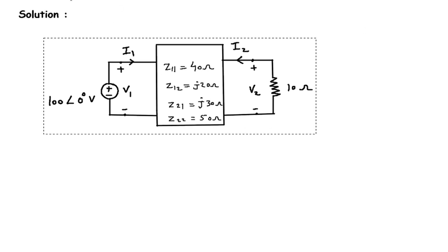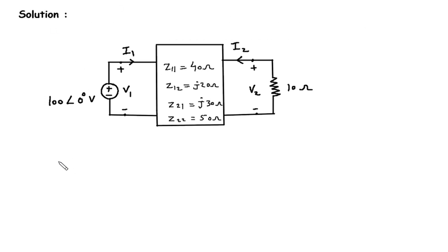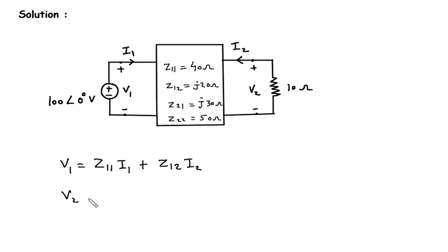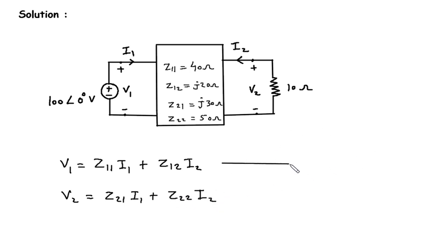First we will write the expression for Z parameters. The expression is: V1 = Z11·I1 + Z12·I2, and V2 = Z21·I1 + Z22·I2. Call these equation number 1 and equation number 2.